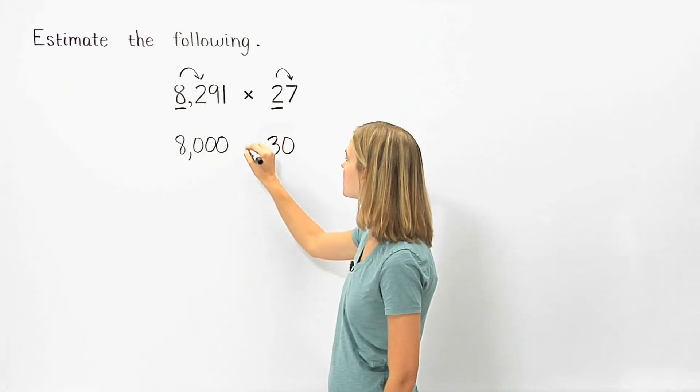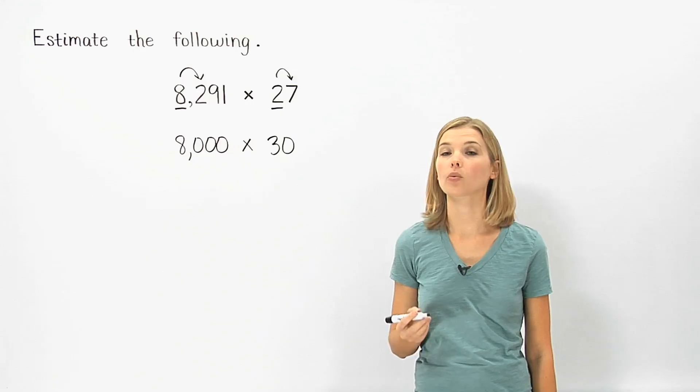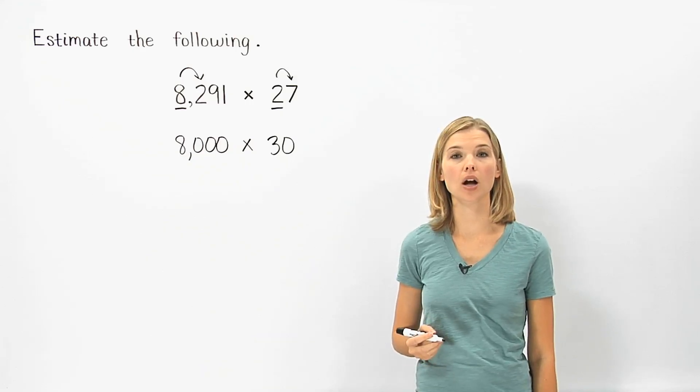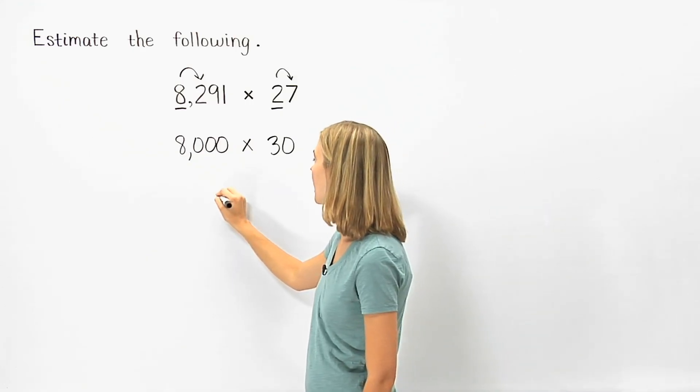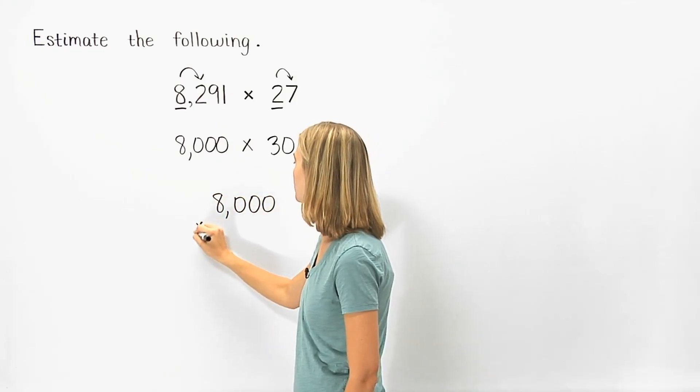So we have 8,000 times 30. Next, we line up the rounded numbers with the larger number on top and multiply. 8,000 times 30.